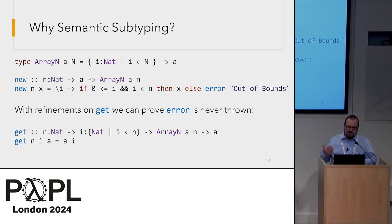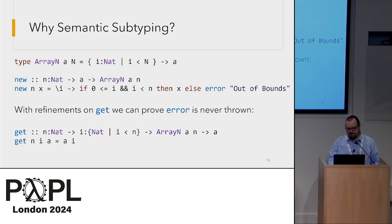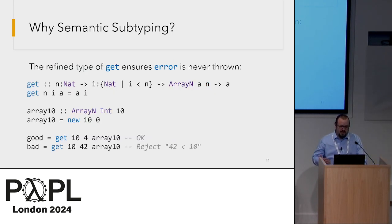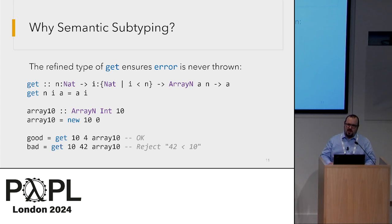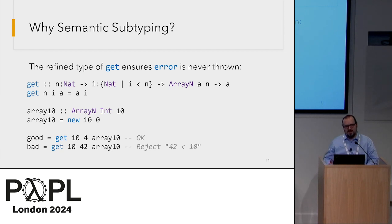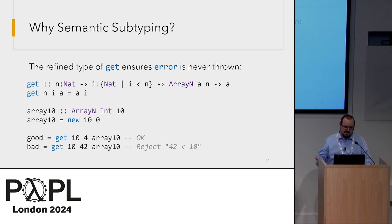We have a precondition on the get function that the index we call at has to be in the valid range defined. We can take an array of length 10 and see that a good call — get 10 four — calls index four, and our system should verify that won't cause any trouble. A bad call to, say, the 42nd index should be rejected at compile time.